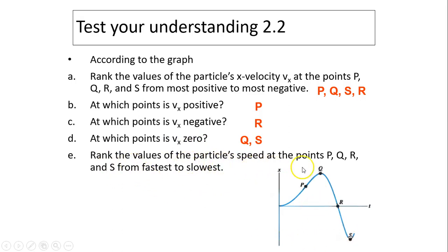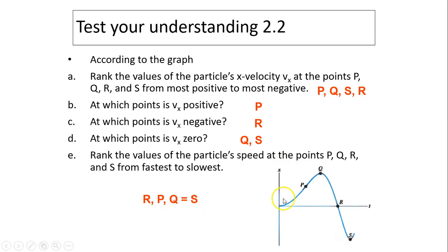Rank the particle's speed at each point. Speed depends on the steepness of the slope regardless of sign. R has the steepest slope, so R is fastest. Then P. Q and S both have zero slope, so their speed equals zero.